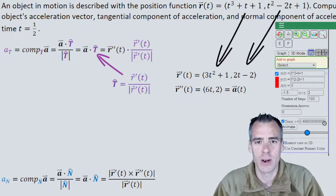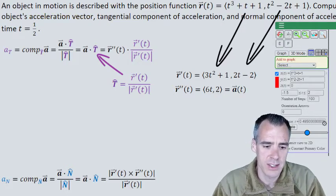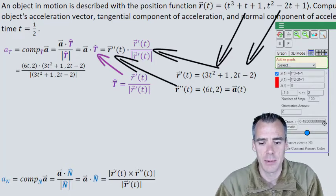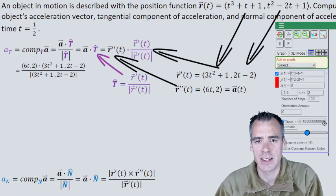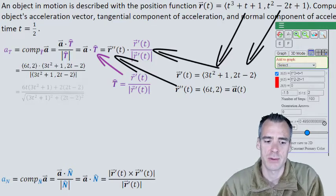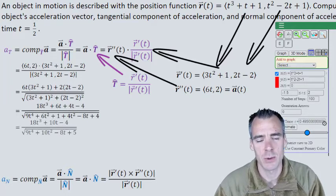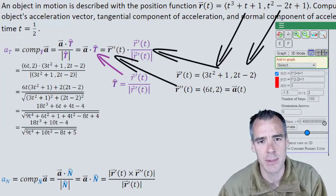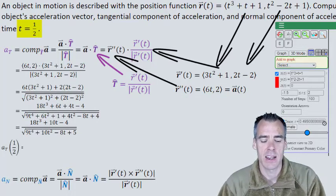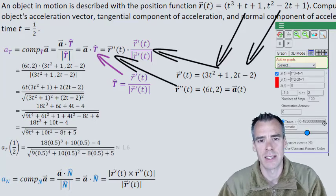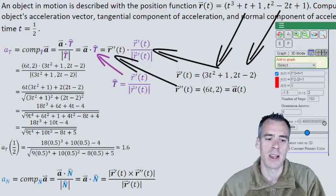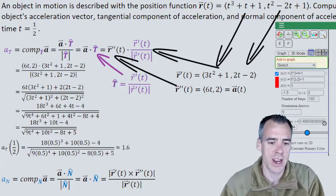Now to find our tangential component of acceleration, all we do is plug those in. If we wanted to finish this the old-fashioned way, it's not too bad but will take a couple algebraic steps, and at the end you're going to have to compute it anyway. Let me show the steps here for reference. But we wanted to find the tangential component of acceleration at t = 1/2. So we just plug that in for t, and cranking through, we end up with approximately 1.6. We'll do it with MATLAB in a second.